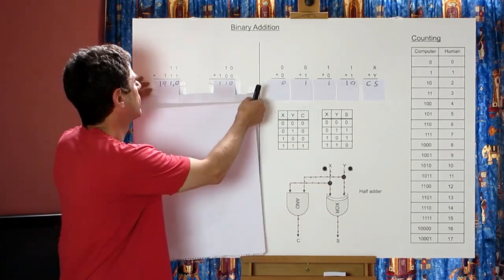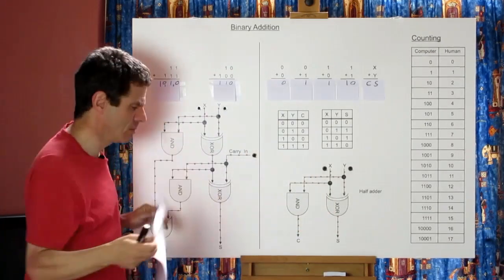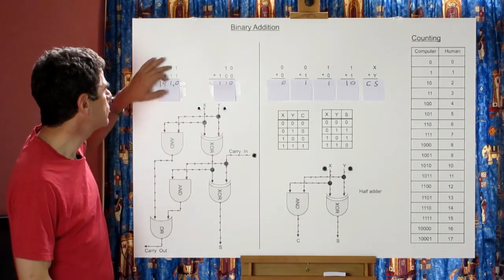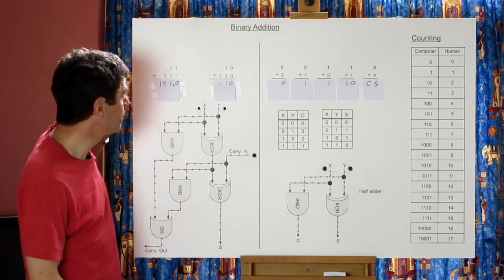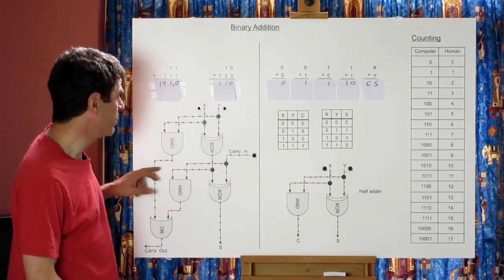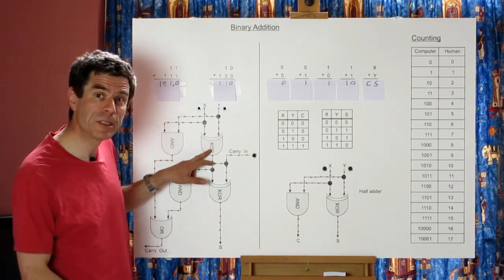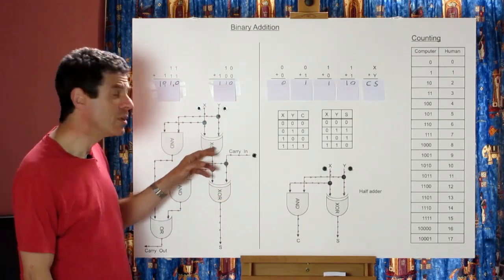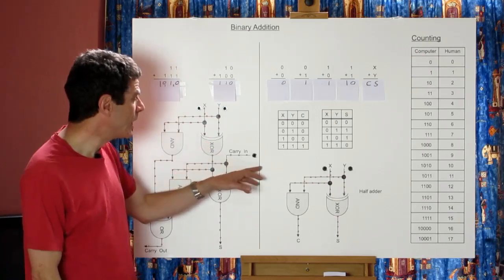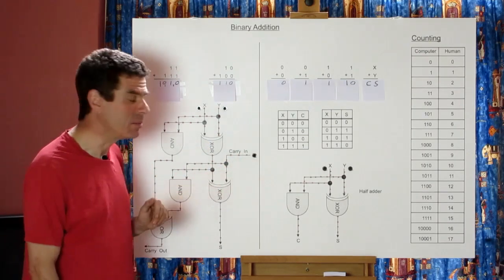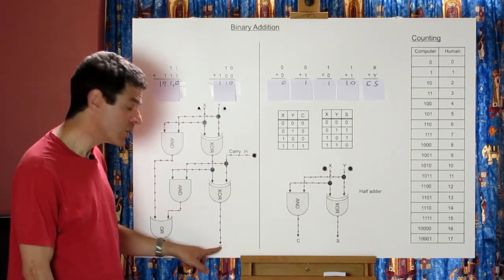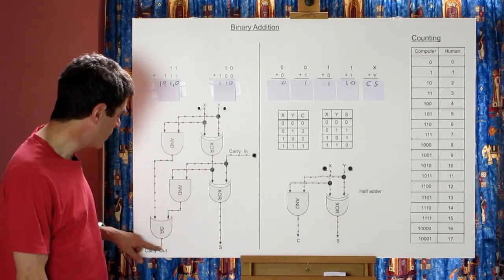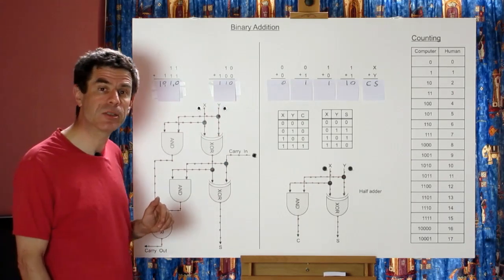So that looks like this. This first half adder is adding the two numbers above the line and generating a possible carry and a first attempt at a sum. Then this second half adder takes that first attempt at a sum and adds in any carry that was generated by the previous column, giving us our actual sum. The two possible carries are OR'd together to give a carry which will go to the next column.